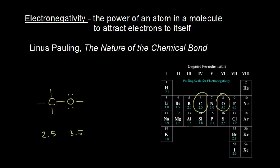If you think about the electrons in the covalent bonds between carbon and oxygen that are shared, they're shared unequally, because oxygen is more electronegative. Oxygen is going to pull those electrons in red closer to itself. Since electrons are negatively charged, the oxygen is going to get a little bit more negative charge, and so it's going to have what we call a partial negative charge on it. The partial sign is a lowercase Greek letter delta.